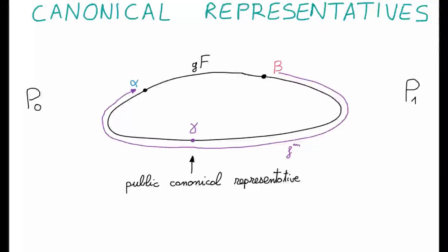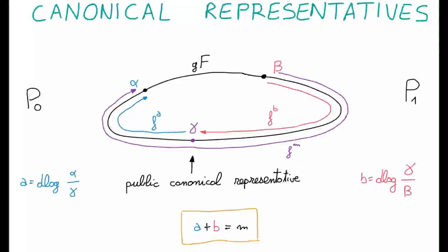Now, we assume that the parties P0 and P1 both know a canonical representative of the coset containing alpha and beta. In this setting, solving the distributed D-log is easy. The parties just need to divide their input by gamma, and then they compute the D-log of the result. And yes, the result is a secret sharing of M.